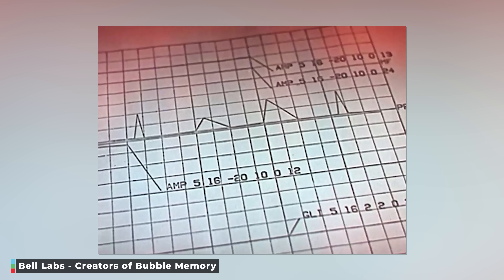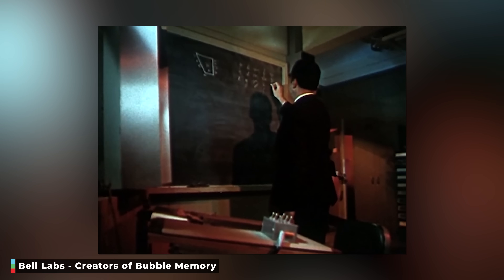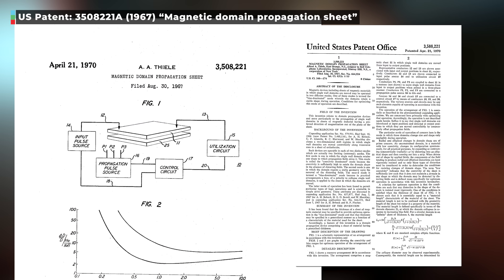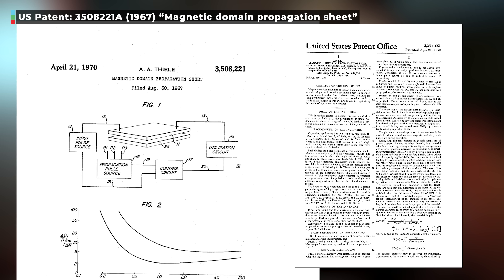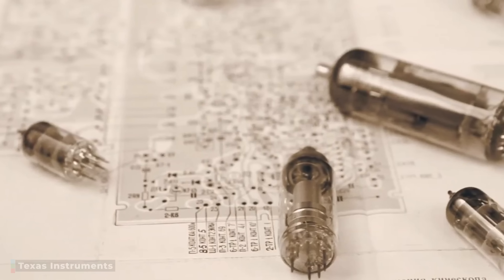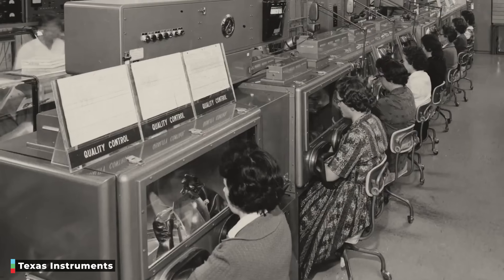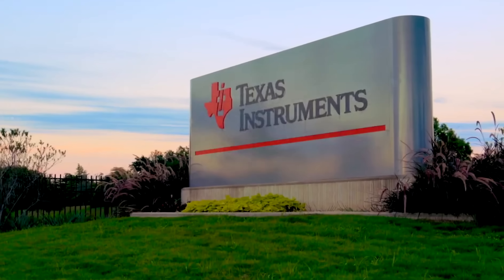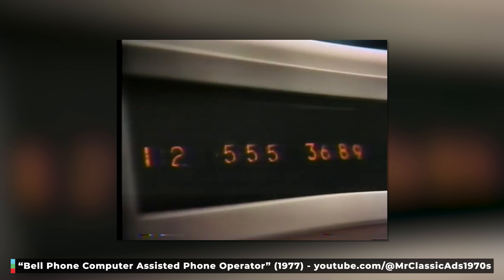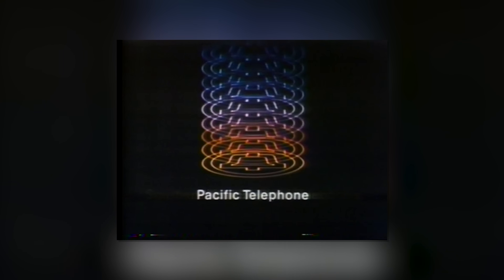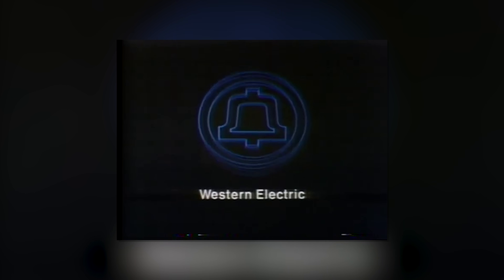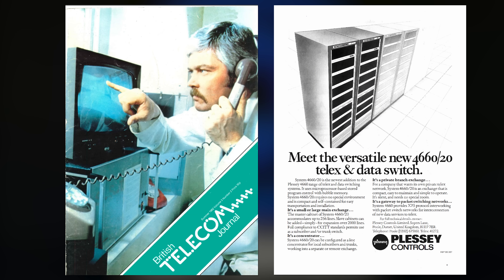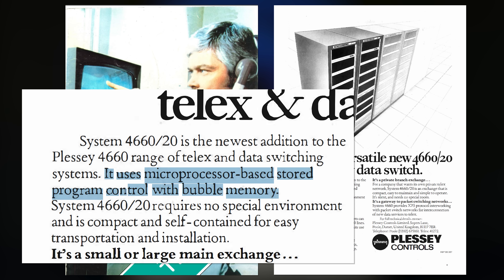Bubble memory, to be precise. This wasn't a new technology though. Bubble memory was developed at Bell Labs in 1967. It was a non-volatile storage medium, meaning data would be retained even when powered off, and was based on the principle of using small, cylindrical magnetic domains — or bubbles — to store data. In the early 1970s, companies such as Texas Instruments, Intel and Hitachi began to invest in the technology. Its first real application would be in 1977, where Bell Telephone used it for their digital recording and playback machine. If you were in the US and heard the 'we're sorry, your call cannot be completed as dialed' message, you may well have interacted with a bubble memory-based system. A 1982 British Telecom journal advertised a telex and data switch with microprocessor-based stored program control with bubble memory, so it was finding its way into all kinds of technology.